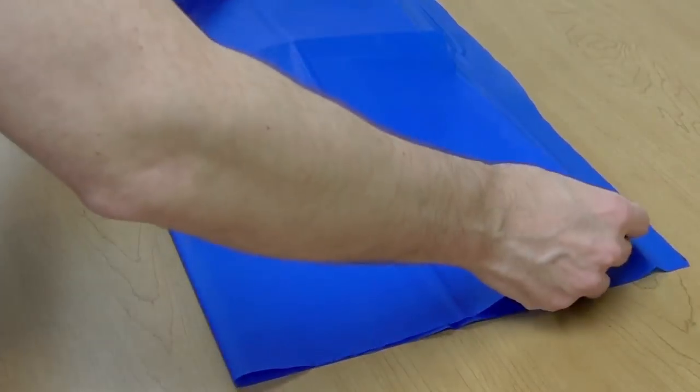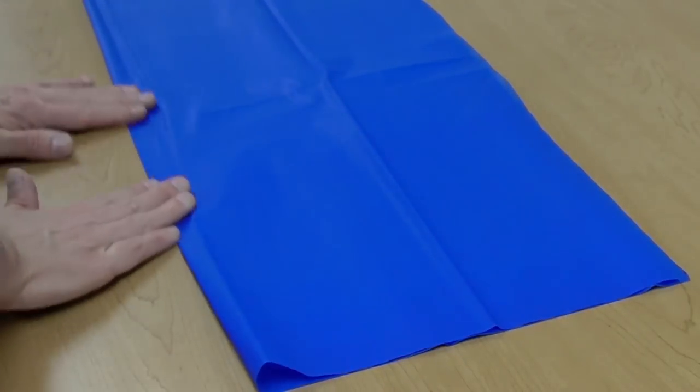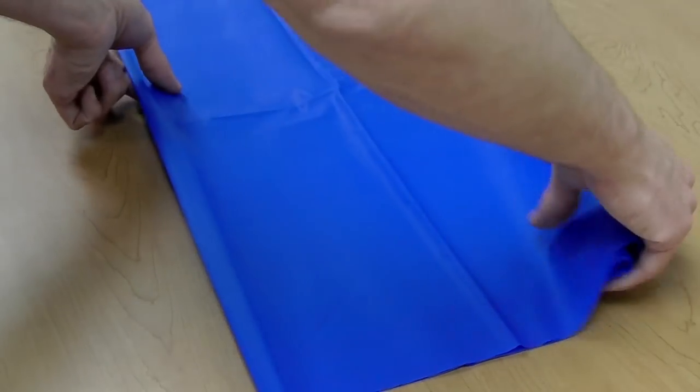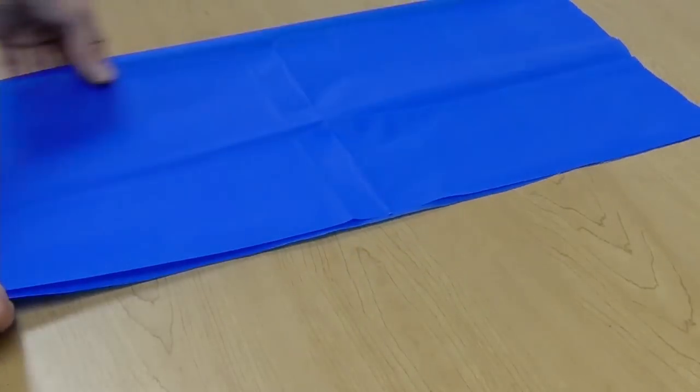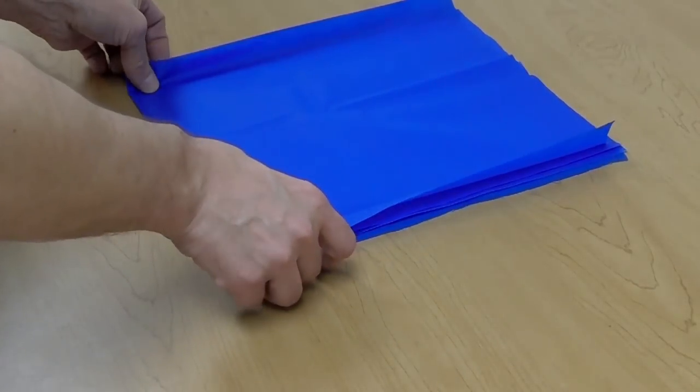Lay the square in front of you and bring the bottom corners up to the top. Fold it neatly. Rotate the sheet 90 degrees clockwise and bring the bottom corners up to the top again and make a nice fold.